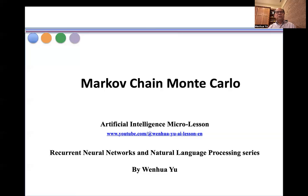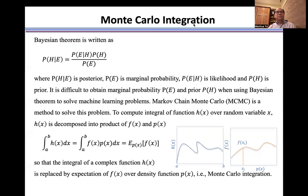In this video, I introduce Markov Chain Monte Carlo. Bayesian theorem is written as this formulation: P(H|E) = P(E|H)P(H)/P(E), where P(H|E) is posterior, P(E) is marginal probability, P(E|H) is likelihood, and P(H) is prior.